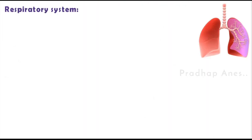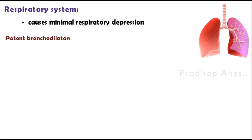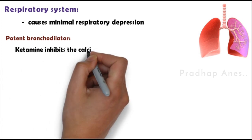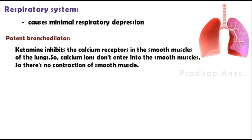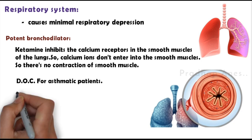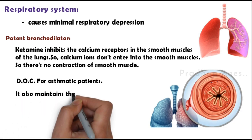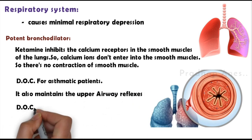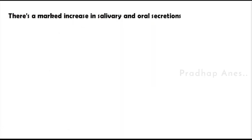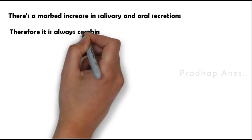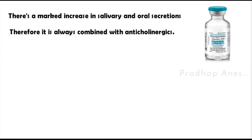Respiratory system: Ketamine causes very minimal respiratory depression and is a potent bronchodilator. It inhibits calcium receptors in the smooth muscles of the lungs, so calcium ions don't enter and there is no smooth muscle contraction, causing bronchial dilation — making it the drug of choice for asthmatic patients. It also maintains upper airway reflexes such as sneezing, coughing, and swallowing, making it the drug of choice for full stomach patients. There is a marked increase in salivary and oral secretions during ketamine administration, so it is always combined with anticholinergics.